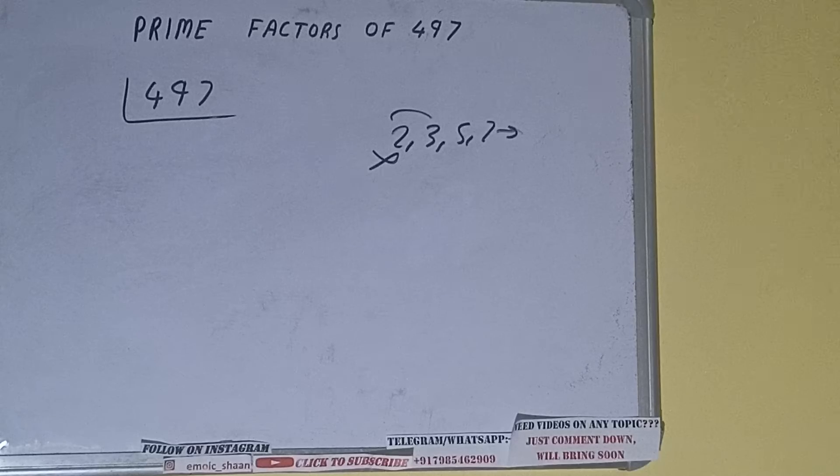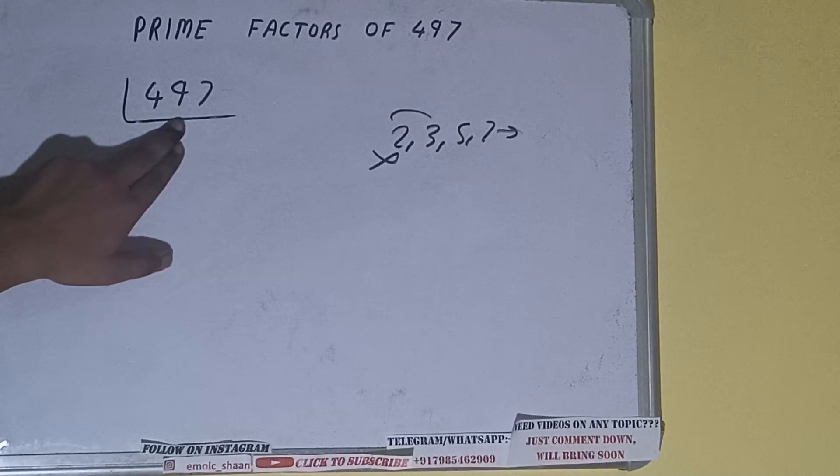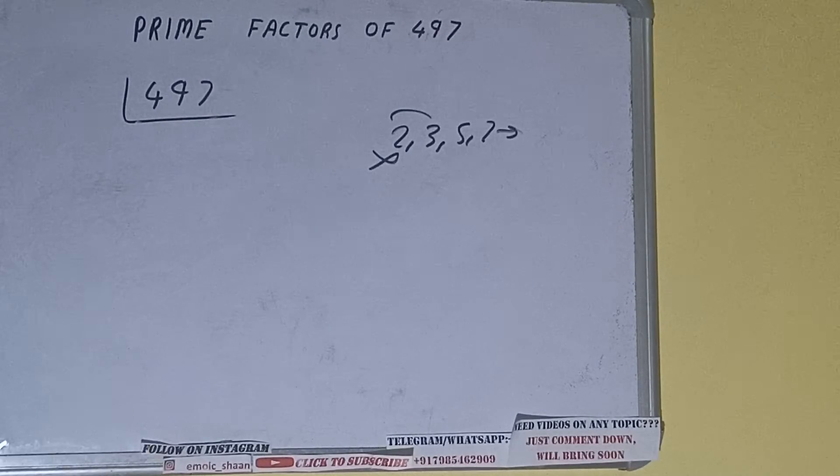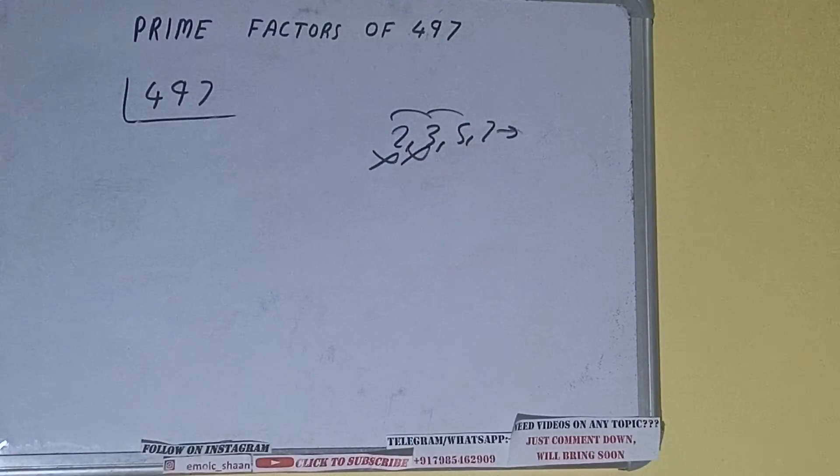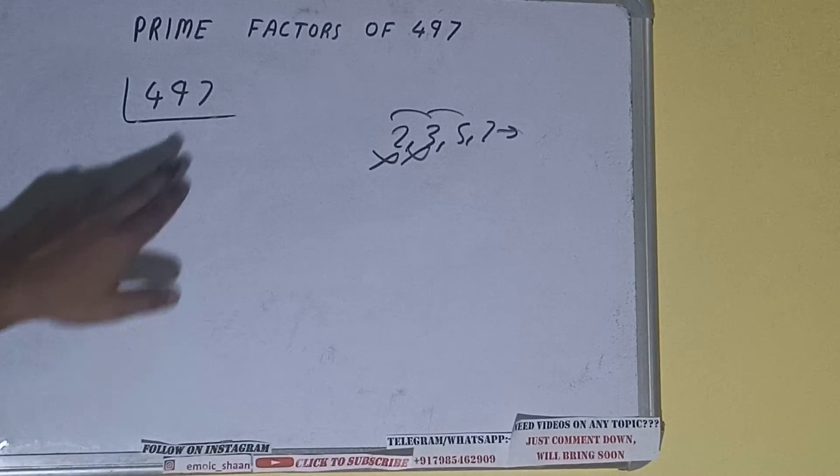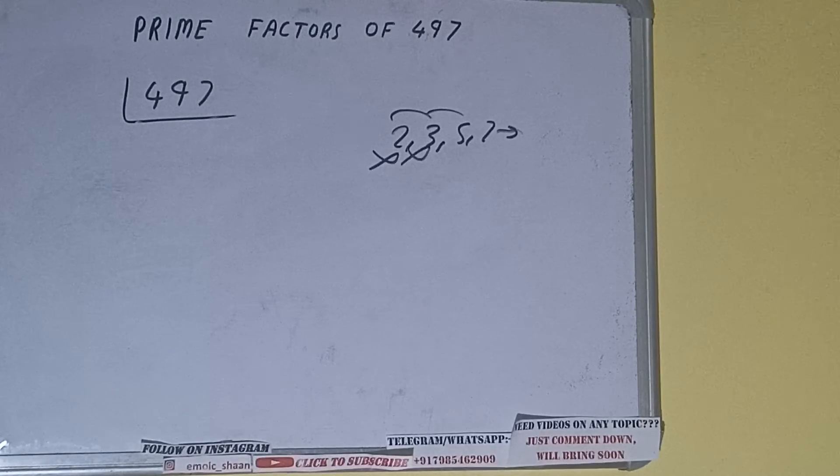Let's check with 5. The last digit is neither 5 nor 0, so it is not divisible by 5. Now let's check with 7. After checking the division, we find that 497 is divisible by 7, so let's divide it.